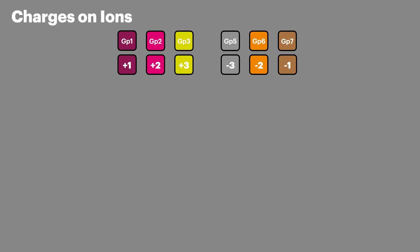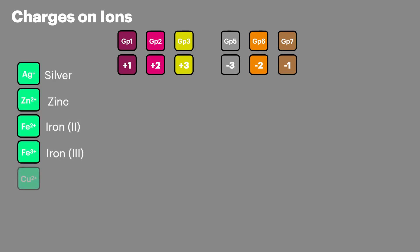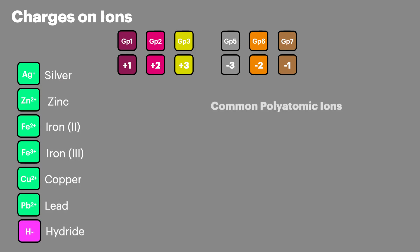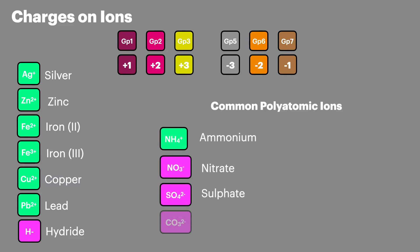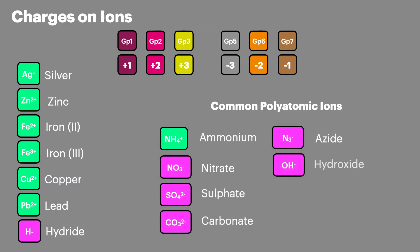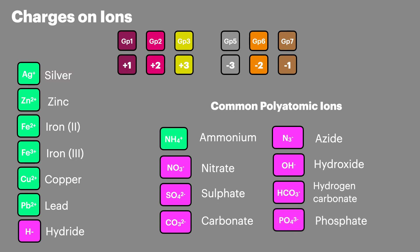There are some ions that don't go to their nearest noble gas and these can be tricky to learn. Here's a good set to start with and they should cover you for most exam questions. There are also ions which are made up of groups of atoms. These are called polyatomic ions or molecular ions. Here are eight of the most common ones that you'll need for your exams, but you're probably already familiar with a few.